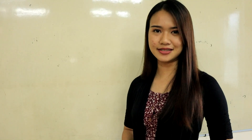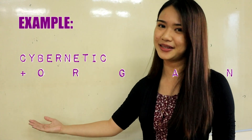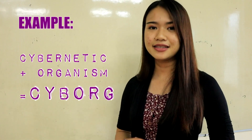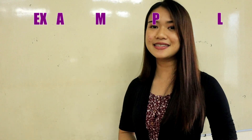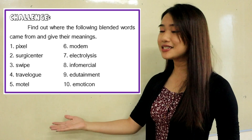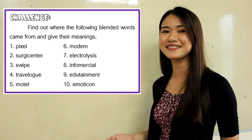Let us now move on to another process: blending, also called portmanteau. This is kind of difficult because it requires creativity to come up with a new word. Most blended words sound really good. Examples include: 'cyborg' from cybernetic plus organism; 'brunch' when we combine breakfast and lunch; and 'smog' from smoke plus fog. I want you to do this activity where you have to find out where the following blended words came from, and please give their meanings as well.